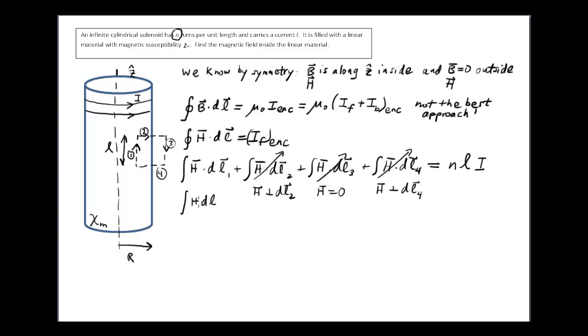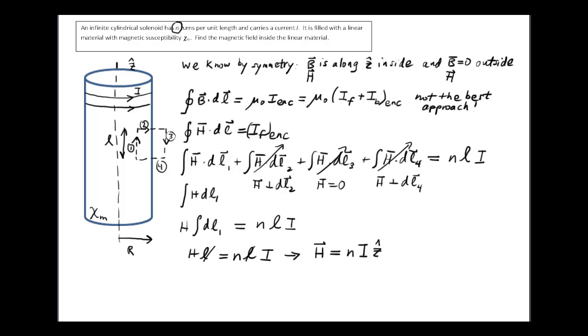So we're left with the integral H dot dl on the left hand side, and here we use symmetry again to argue that H should be the same everywhere along this loop dl. So we'll pull the H outside the integral: H integral dl, and that's equal then to n times l times I. And this integral of dl one from bottom to top on side one is just l. So H times l equals n times l times I, and directly we've now found H. H is equal to n times I. That's the magnitude of it. And I'll just put in the vector nature of it because we know it's along the z direction.